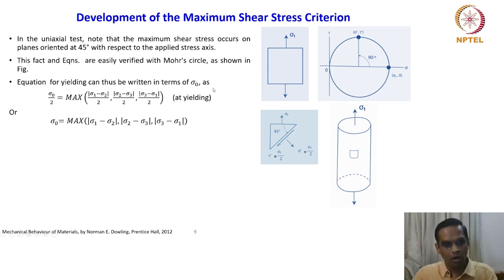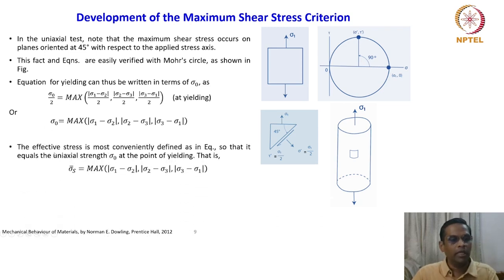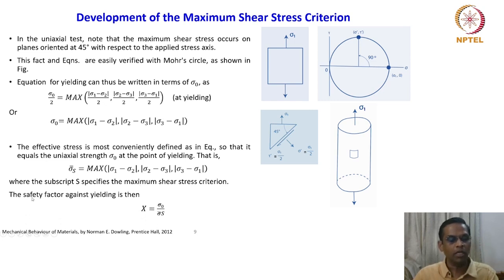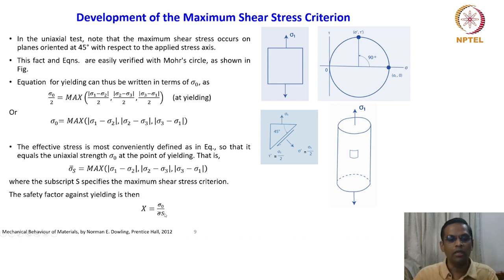The equation for yielding can thus be written in terms of σ₀ as σ₀/2 = max(τ₁, τ₂, τ₃). The effective stress is most conveniently defined in this equation so that it equals the uniaxial strength σ₀ at the point of yielding. This can be rewritten as σ̄ₛ = max(τ₁, τ₂, τ₃), where the subscript s specifies the maximum shear stress criterion. Note: there is a typo — it should read σ̄ₛ.